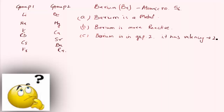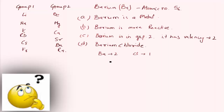The next question: what will be the formula of barium chloride? Barium has a valency of 2, and chlorine has a valency of 1. Therefore, the formula of barium chloride is BaCl2.